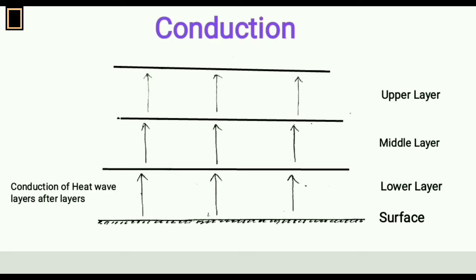Conduction: As the lower layer of atmosphere is warmed up by radiation, the heat is transmitted to the next upper layers of atmosphere. This process is called conduction.